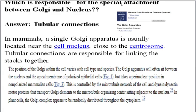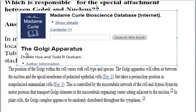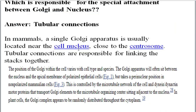Next, which is responsible for spatial attachment between Golgi and nucleus? For this you can refer to the Madame Curie Bioscience Database, the Golgi Apparatus article. The correct option is tubular connection. In mammals, the Golgi apparatus attaches closer to the nucleus; in eukaryotic cells, the tubular connection links the stacks together. Golgi positioning varies with cell type and species, often sits between the nucleus and apical membrane of polarized epithelial cells, and is controlled by a microtubule network involving dynein and dynactin motor proteins.